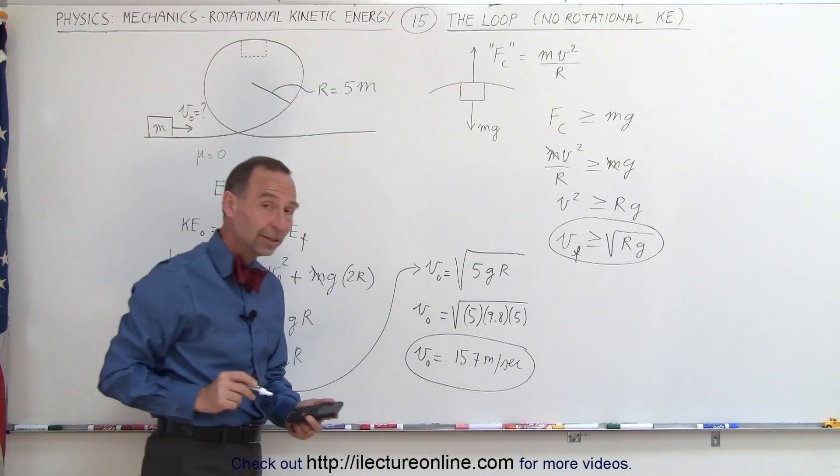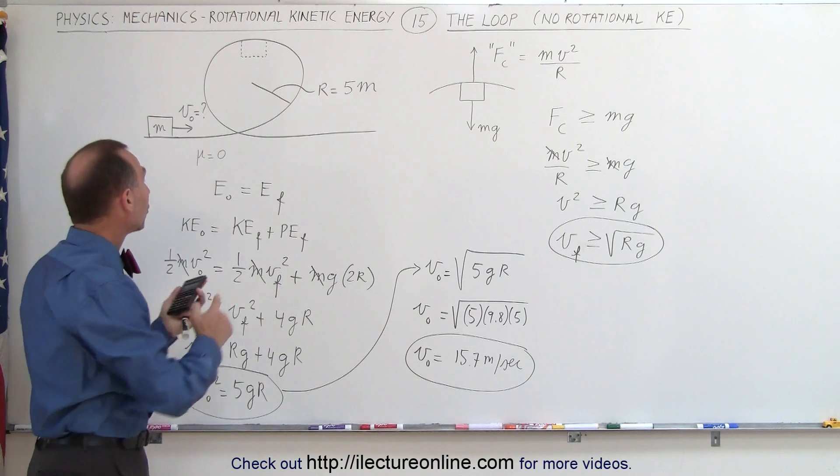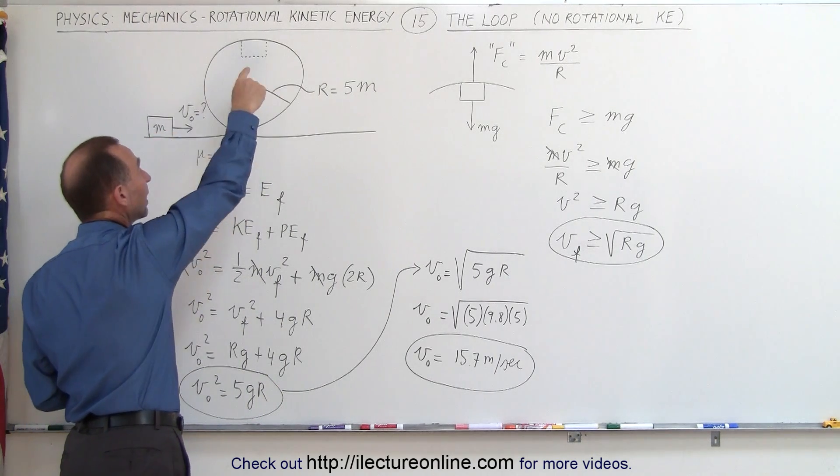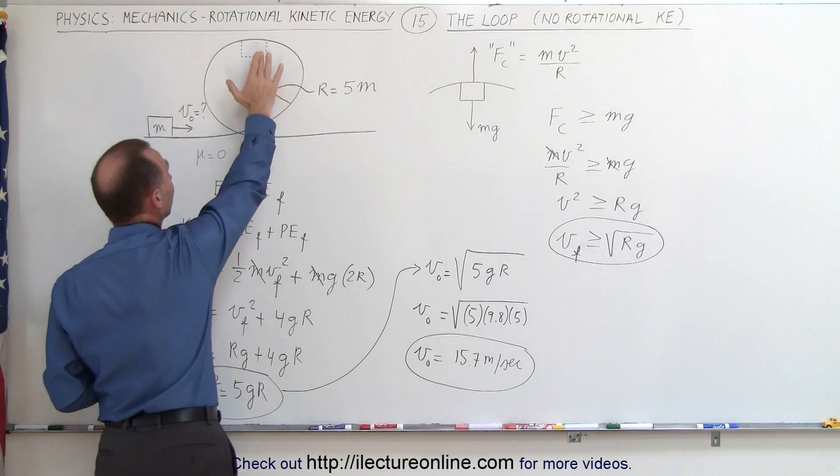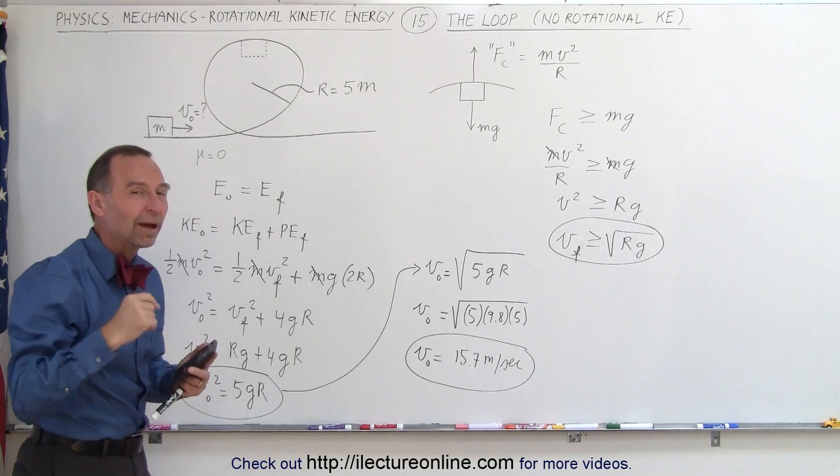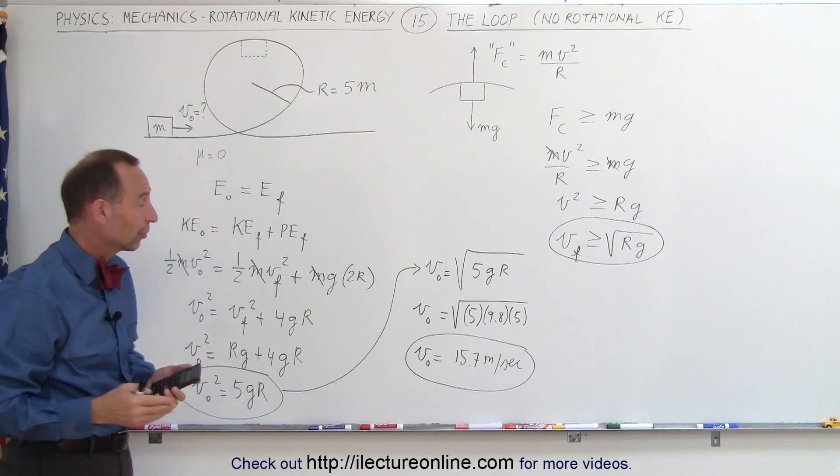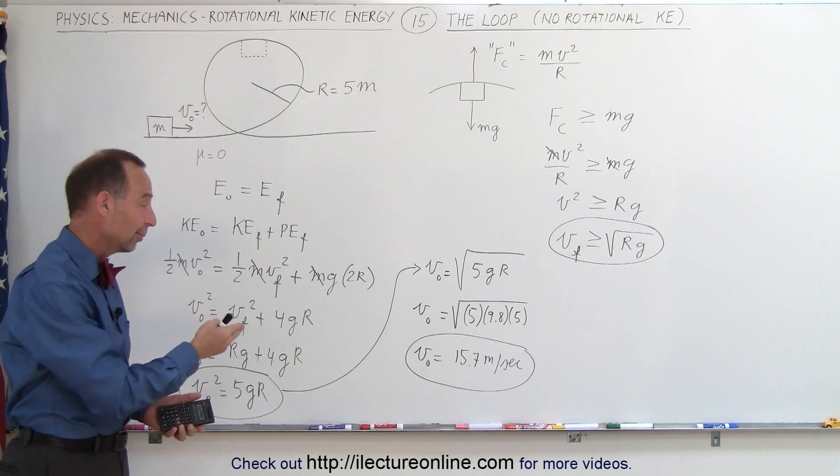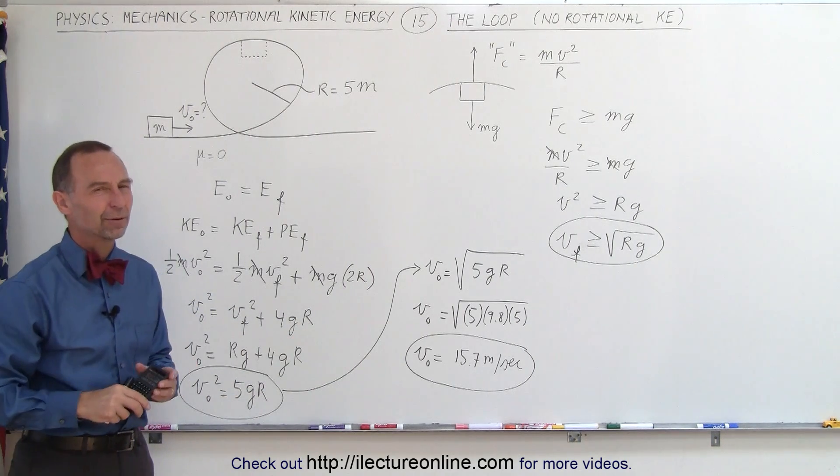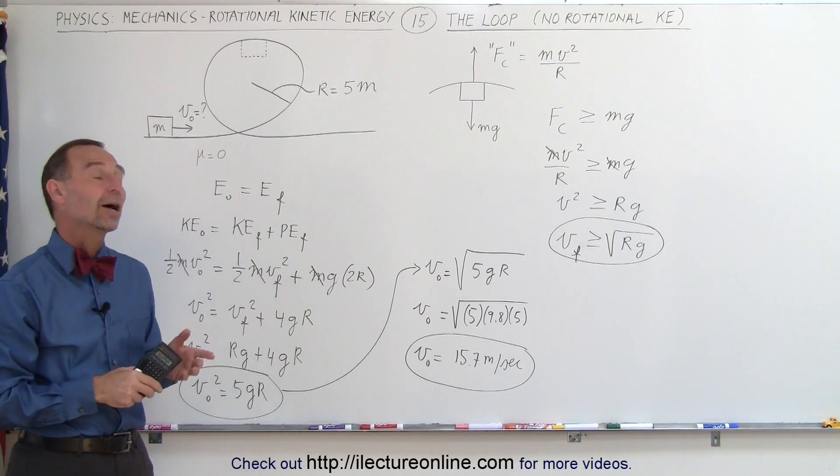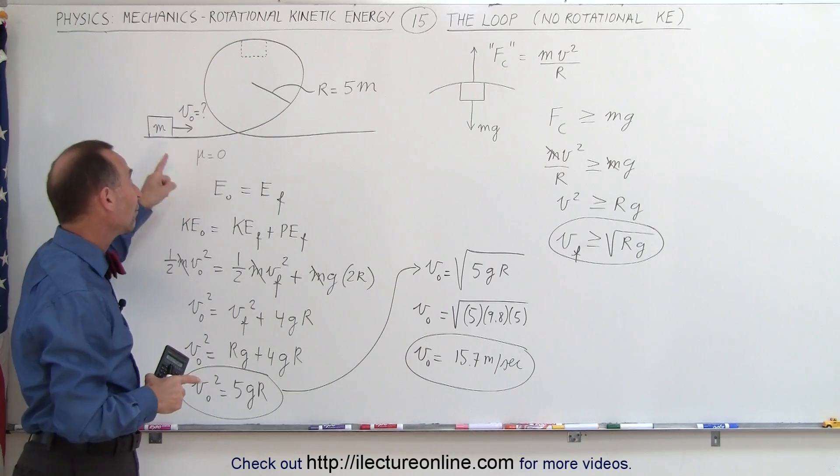Now we're going to remember that value because in the next video we're going to have a rolling object doing the same thing, and again, what will be the initial velocity at the bottom in such a way that it will not fall off the top? When we have a rolling object that means it also has rotational kinetic energy. In this case we didn't have any of that, and that's a much more straightforward problem that you've probably seen before. So let's go to the next video now and see what it looks like when we have a rotating object instead.